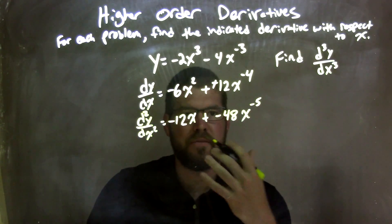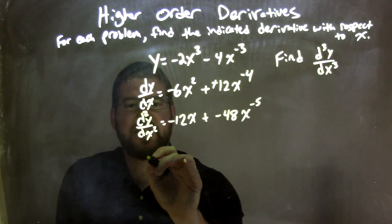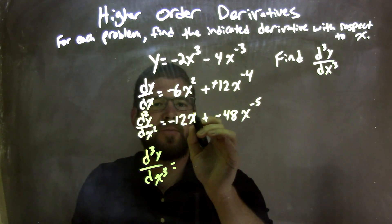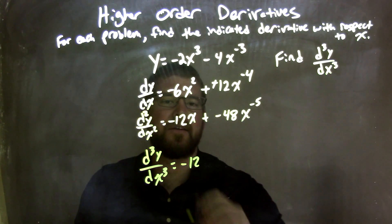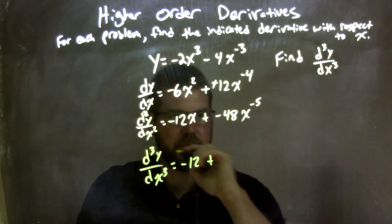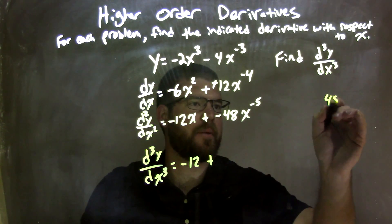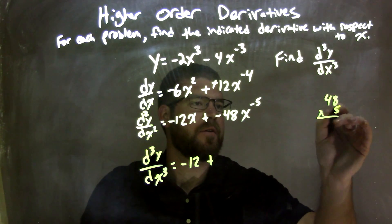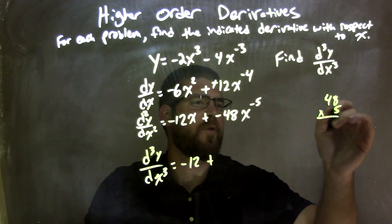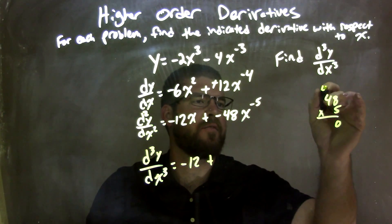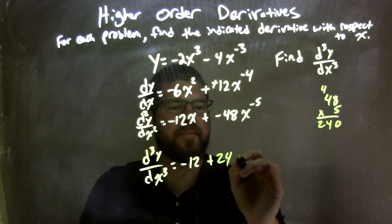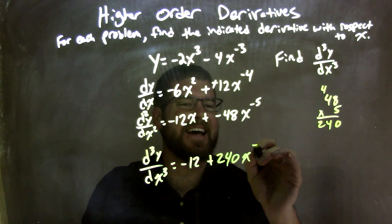Now we need to find the third derivative: d³y/dx³. Applying the power rule to negative 12x gives us just negative 12. Then negative 5 times negative 48 — let's work that out: 48 times 5, both negatives multiply to a positive. 5 times 8 is 40, 4 times 5 is 20 plus 4 is 24, so we have 240. That gives us positive 240x to the negative 6th power.